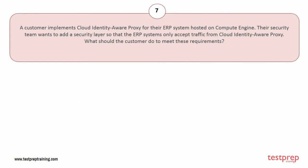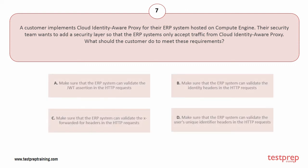Question number seven: a customer implements Cloud Identity Aware Proxy for their ERP system hosted on Compute Engine. Their security team wants to add a security layer so that the ERP system only accepts traffic from Cloud Identity Aware Proxy. Options: A) make sure that the ERP system can validate the JWT assertion in the HTTP requests. B) make sure that the ERP system can validate the identity headers in the HTTP requests. C) make sure that the ERP system can validate the X-Forwarded-For headers in the HTTP requests. D) make sure that the ERP system can validate the user's unique identifier headers in the HTTP requests.